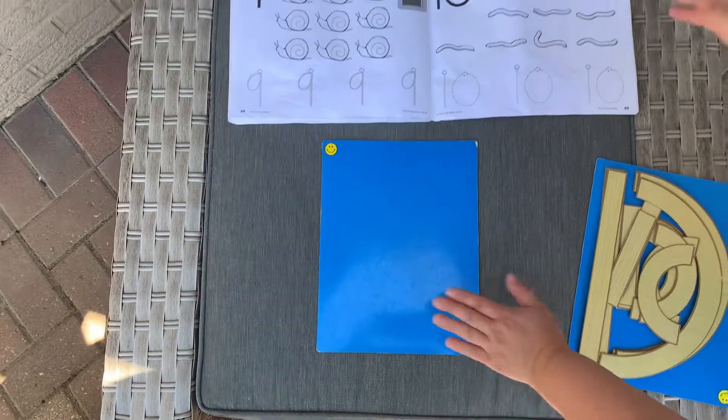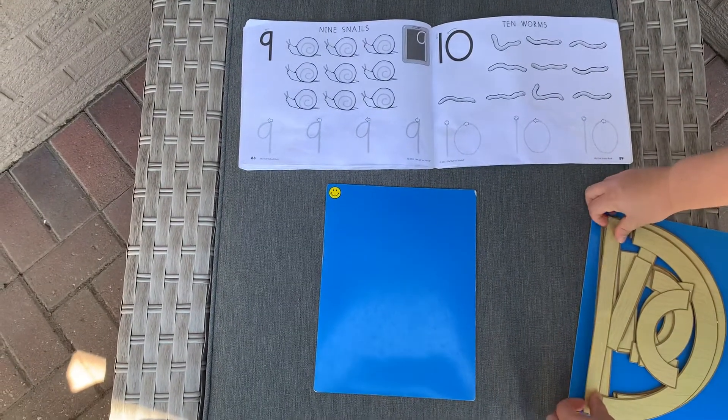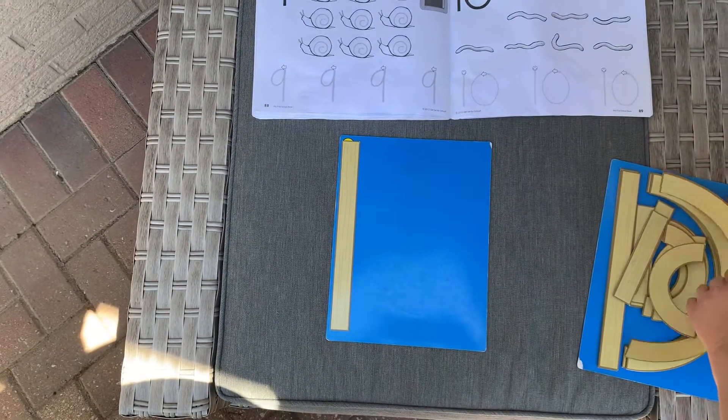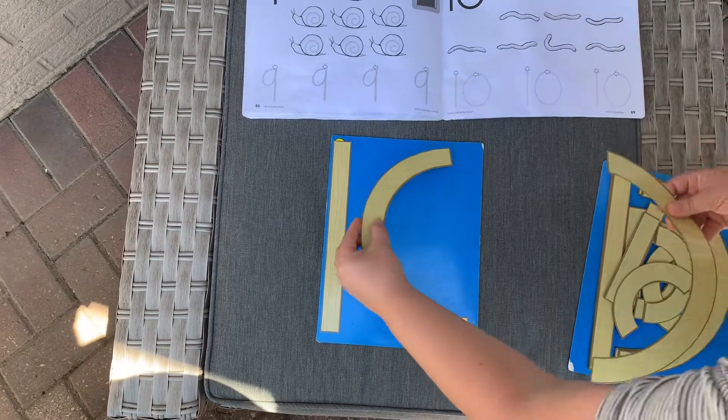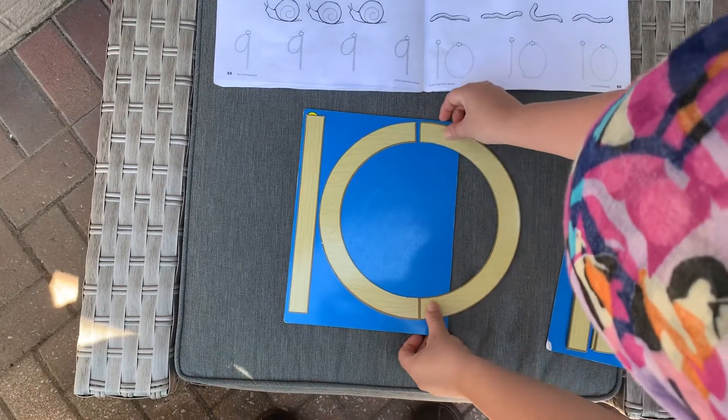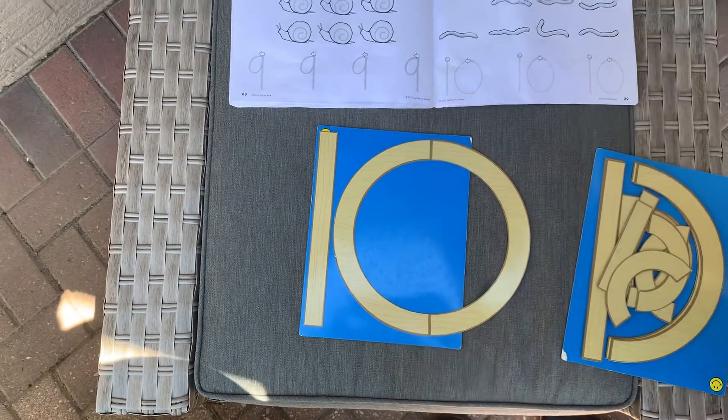It's hard to make on our blue mat because it's kind of big but we'll do our best. Big line down, that's for the number one. And then just like we make an O, you're going to make a circle for your ten.